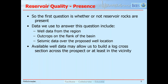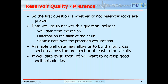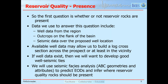Available well data may allow us to build log cross-sections and either extrapolate or interpolate well information to the area where our prospect is positioned. If well data exists along with seismic data, we want to develop good well-seismic ties. We'll use seismic facies analysis — including the geometric observations and seismic attributes covered in previous sessions — to predict environments of deposition and infer where reservoir quality rocks may be present.